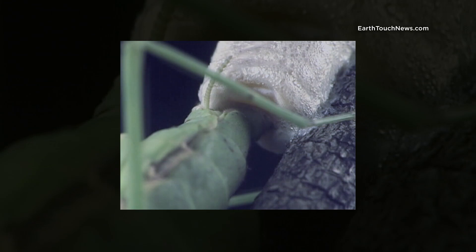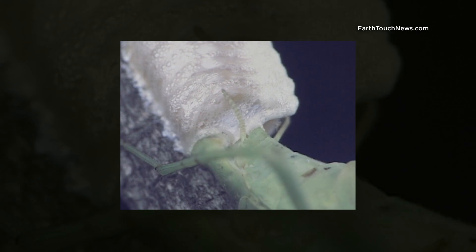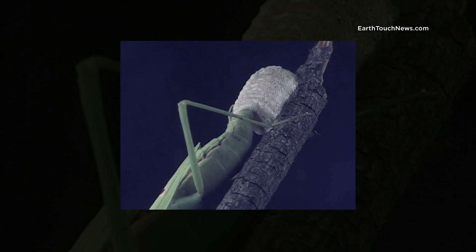Praying mantids begin their lives like this. The female prepares the ootheca, or egg sac, which is coated in an oozing mass that will harden into a protective tomb with her offspring inside it.